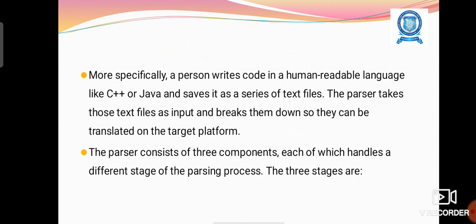A person writes code in a human-readable language like C++ or Java and saves this as a series of text files. The parser takes those text files as input and breaks them down so they can be translated on the target platform. The parser consists of three components, each of which handles a different stage of the parsing process.